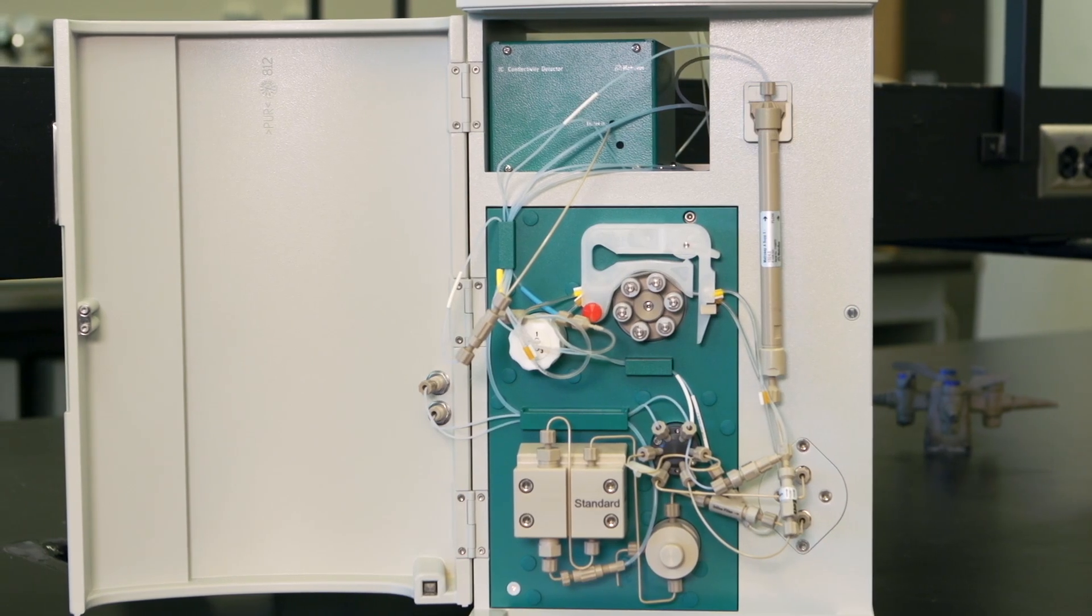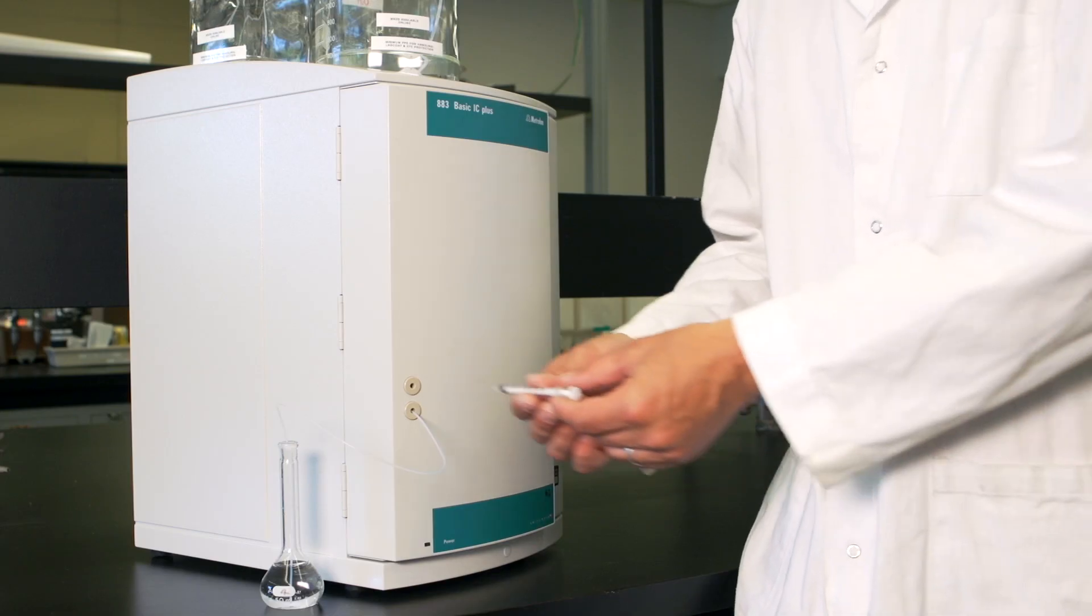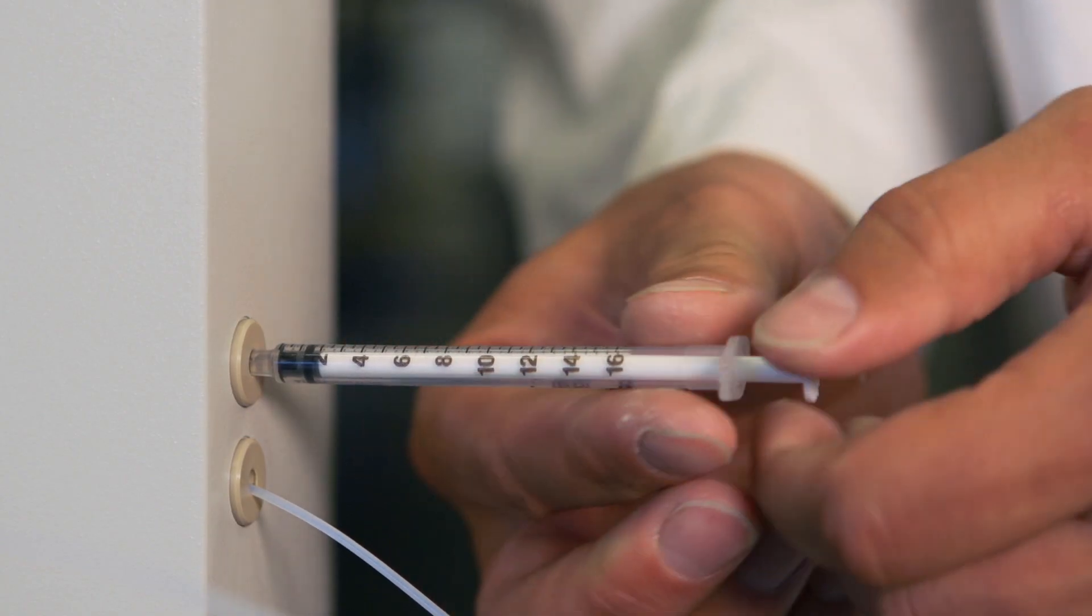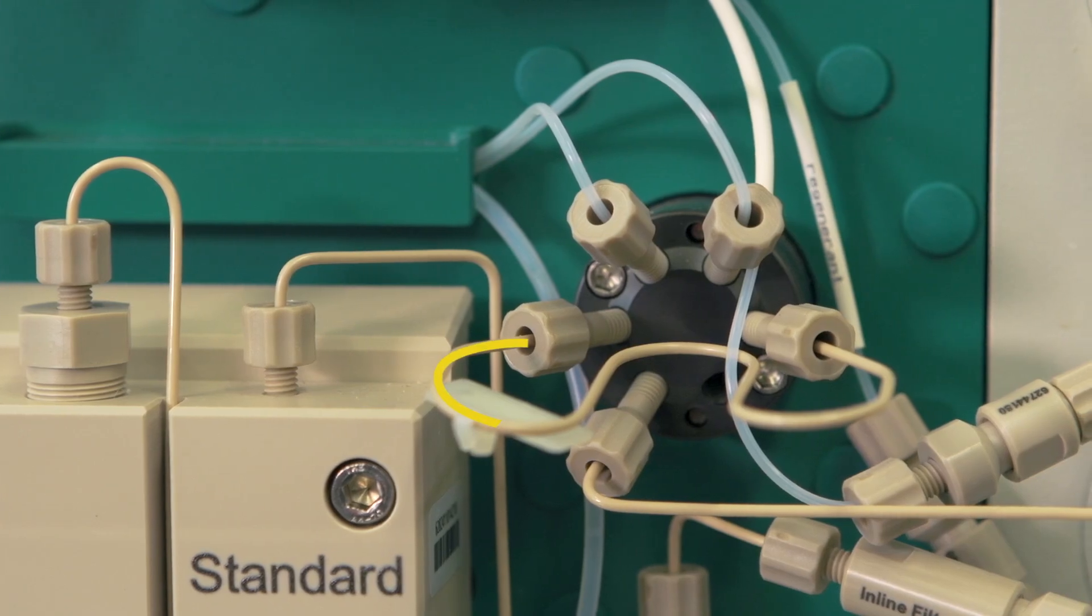Once the eluent is flowing throughout the instrument, the sample is introduced. The analyte is introduced into the sample loop by suction. Use of the sample loop allows for reproducible sample volumes.